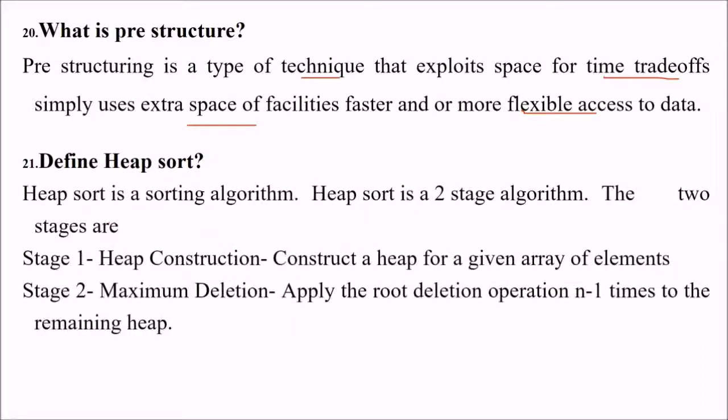Define heap sort. Heap sort is a sorting algorithm, a two-stage algorithm. First, we construct a heap for a given array of elements. Then, there will be maximum deletion - we apply root deletion operation n minus 1 times to the remaining heap. We can have min heap and max heap every time, and we just take out the root. That will be the maximum or minimum value.